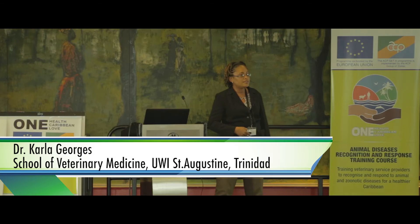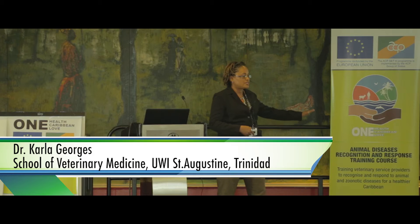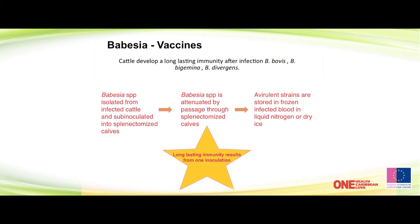Vaccines and control — that's the hot topic. We all want to vaccinate because we know we're all trying to bring in animals and they always get Babesia. In brief: Babesia species isolated from infected cattle are attenuated by passage through splenectomized calves. The blood is then stored in liquid nitrogen or dry ice and can be used as a vaccine. What's important is that you get long-lasting immunity from these vaccines.